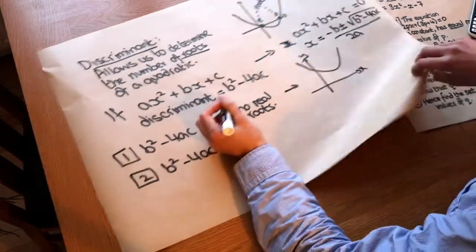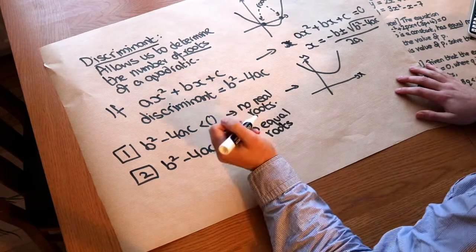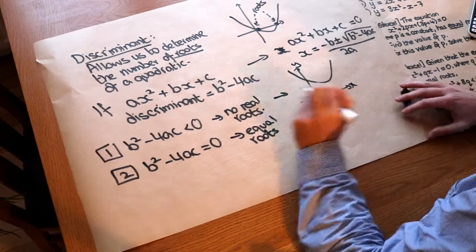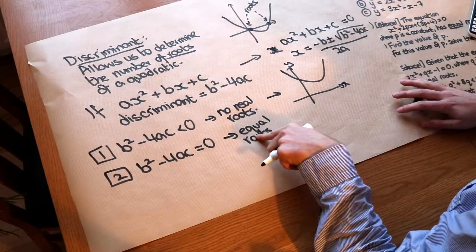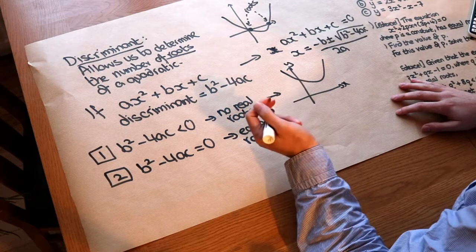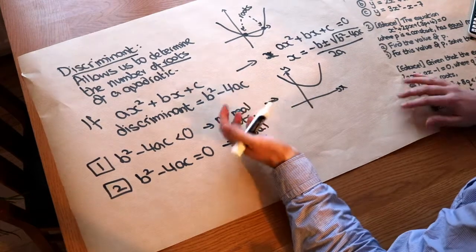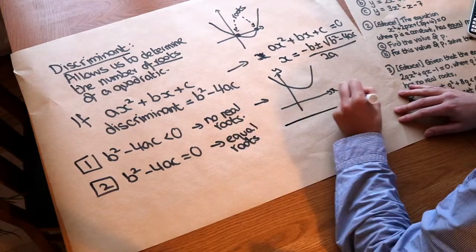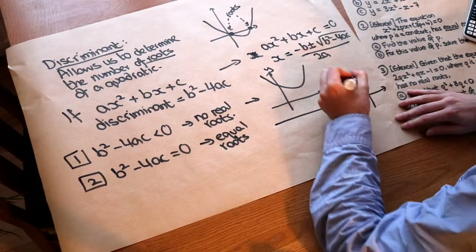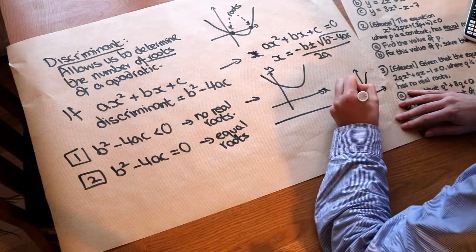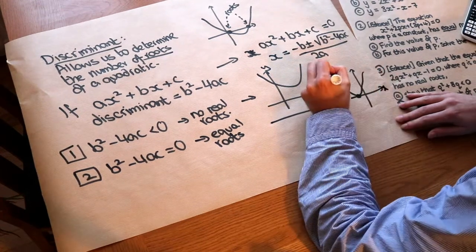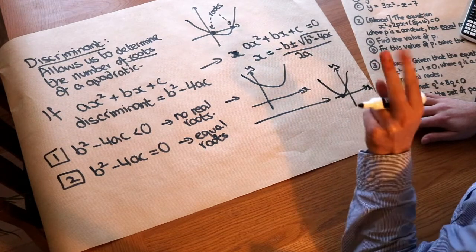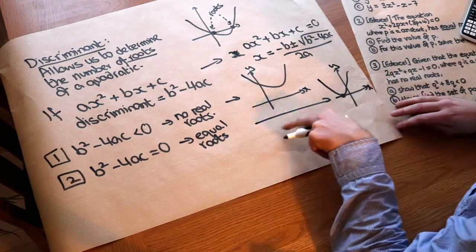And we say that we have equal roots. Or another way of saying that is that we only have one distinct solution for our quadratic. Equal roots is a bit of a funny way of saying it. We're basically saying we have two solutions, but the same value. But what it would actually look like is this graph here: the quadratic graph would touch the x-axis, and you can see you're only going to get one distinct solution. So we have equal roots, so it might both be -1, for example.